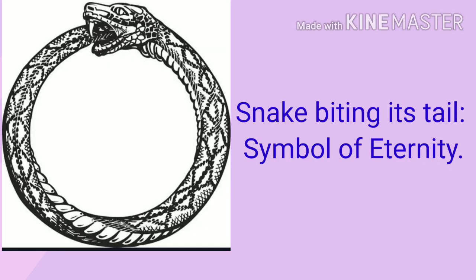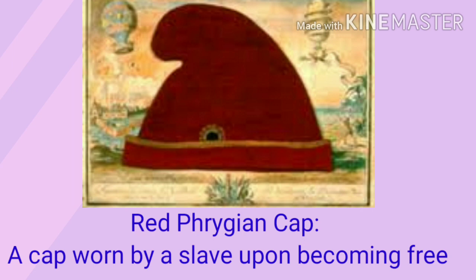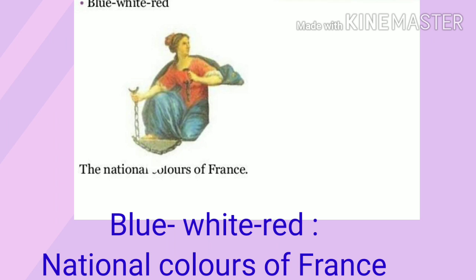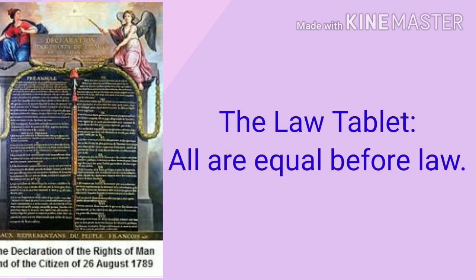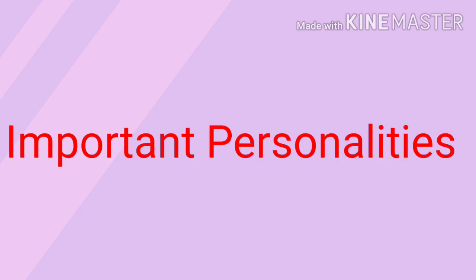The Snake Biting Its Tail to Form a Ring was a symbol of eternity. The Red Phrygian Cap was a cap worn by a slave upon becoming free. Blue, White, and Red were the national colours of France. The Winged Woman was the personification of law. The Law Tablet symbolizes that the law is the same for all — it also means that everybody is equal in the eyes of law. These were a few important terms and political symbols frequently asked in examinations.